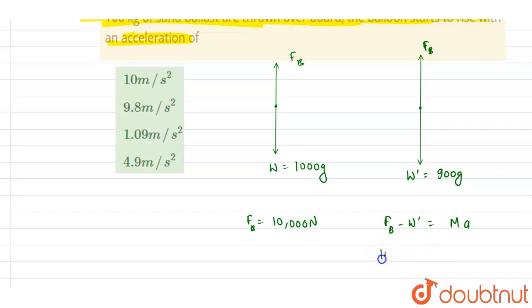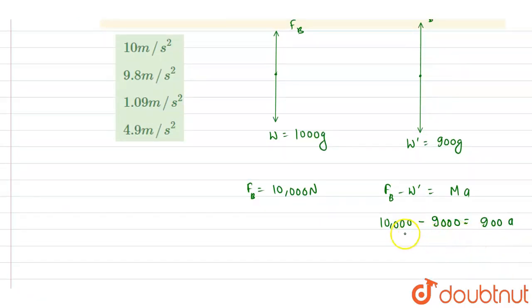Mass times acceleration. So it is 10,000 minus 9,000. So it is minus 9,000 equals the total mass, that is 900, times acceleration. So if you see, this is 1000 by 900.